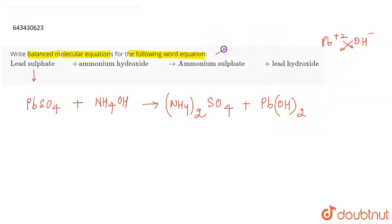And similarly, in the case of ammonium sulfate also, ammonium has NH4 plus and sulfate is SO4 2 negative. So on interchanging the ion or the valencies, we will get the formula (NH4)2SO4. So this is the chemical equation that we have got.